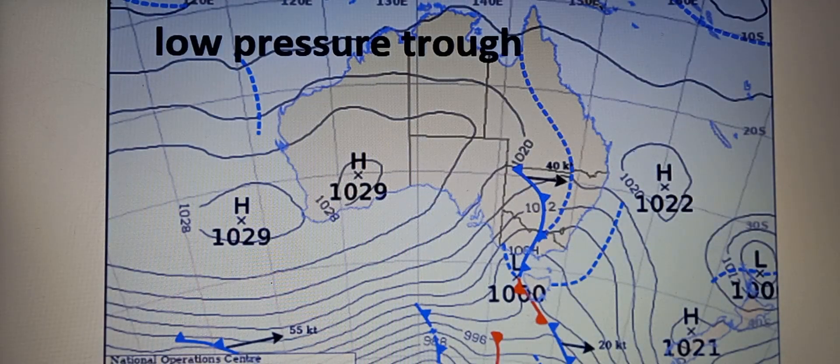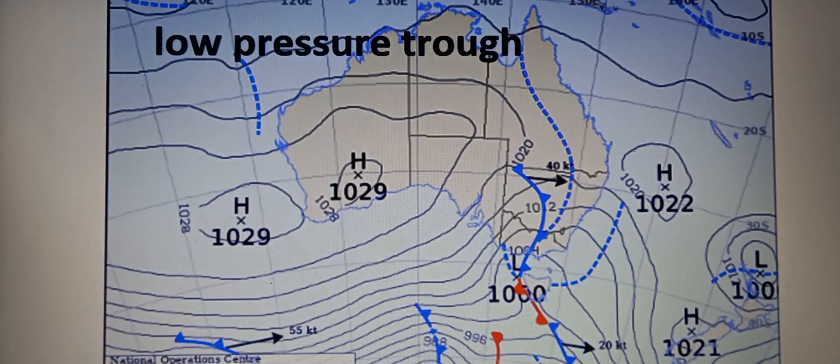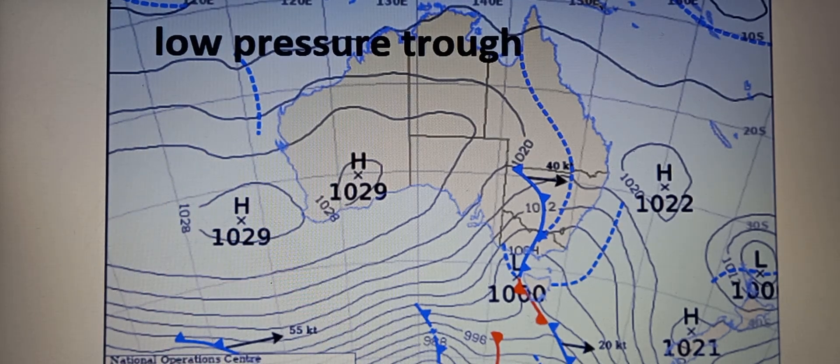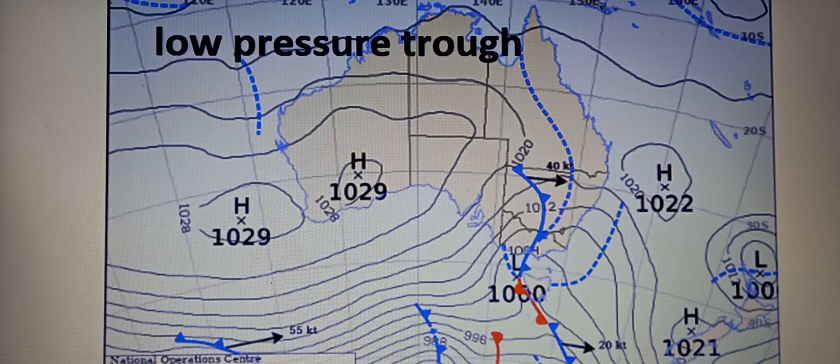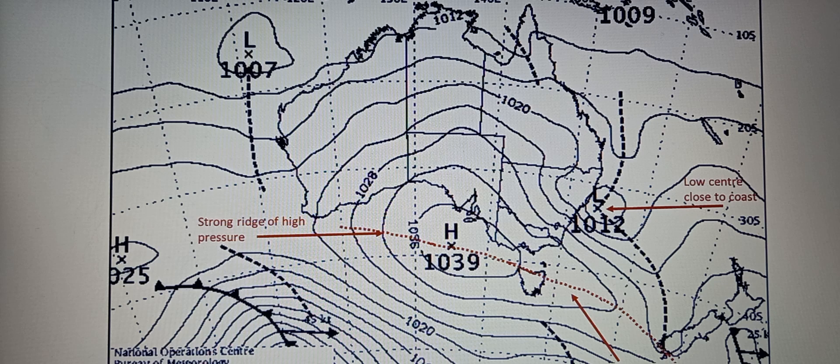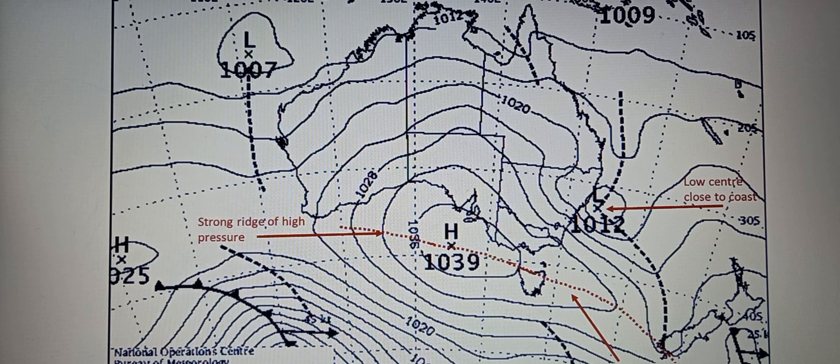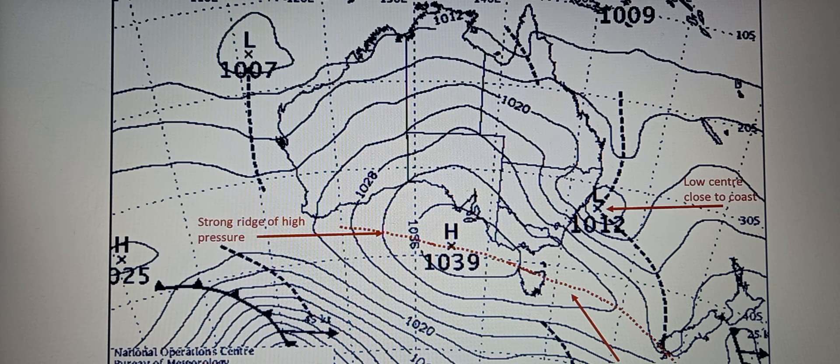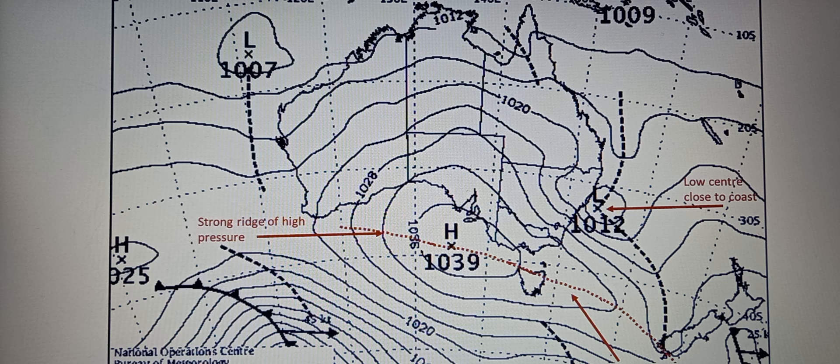Let's go to low-pressure trough. It is a dashed line, often called simply a trough. This is an elongated area with lower atmospheric pressure than its surroundings. This trough can extend horizontally across the Earth's surface, taking on various shapes and is linked to specific weather patterns. They bring unsettled weather including cloud formation, precipitation, and sometimes thunderstorms.